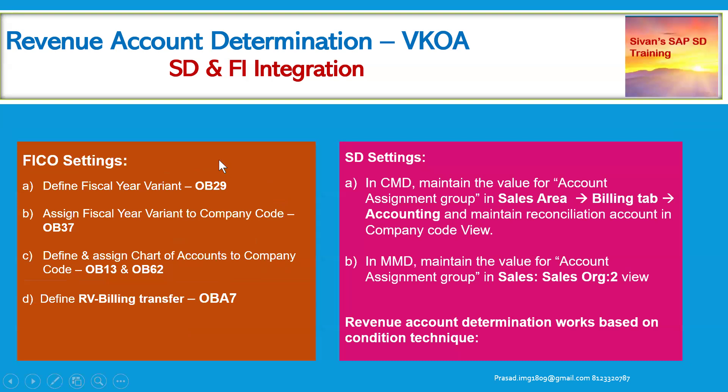We need to explain both the FICO settings and the SD settings during the interview. The FICO settings include: defining the fiscal year variant and assigning it to the respective company codes, defining and assigning the chart of accounts to the company code, and defining the RV document type — like our F2 billing document type which we define in the VOFA transaction from the SD perspective.